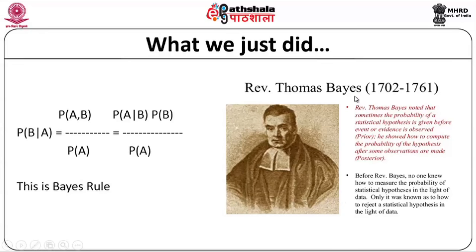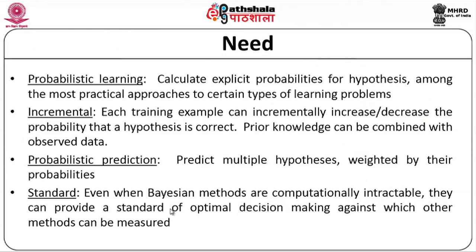What we have done so far is actually associated with Thomas Bayes. Thomas Bayes gave us a rule called Bayes' theorem, famously called Bayes' rule. Bayes' rule states that probability of B given A equals probability of A given B multiplied by probability of B, divided by probability of A. Having understood simple probability, conditional probability, sample space, outcome, and event, we will now understand how conditional probability and Bayesian theorem may be useful for analytics.